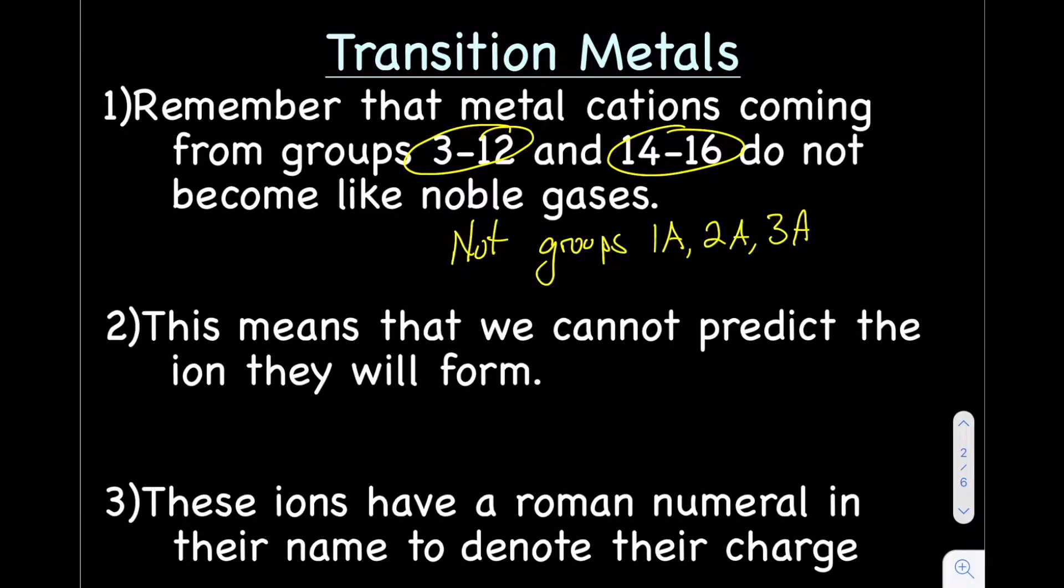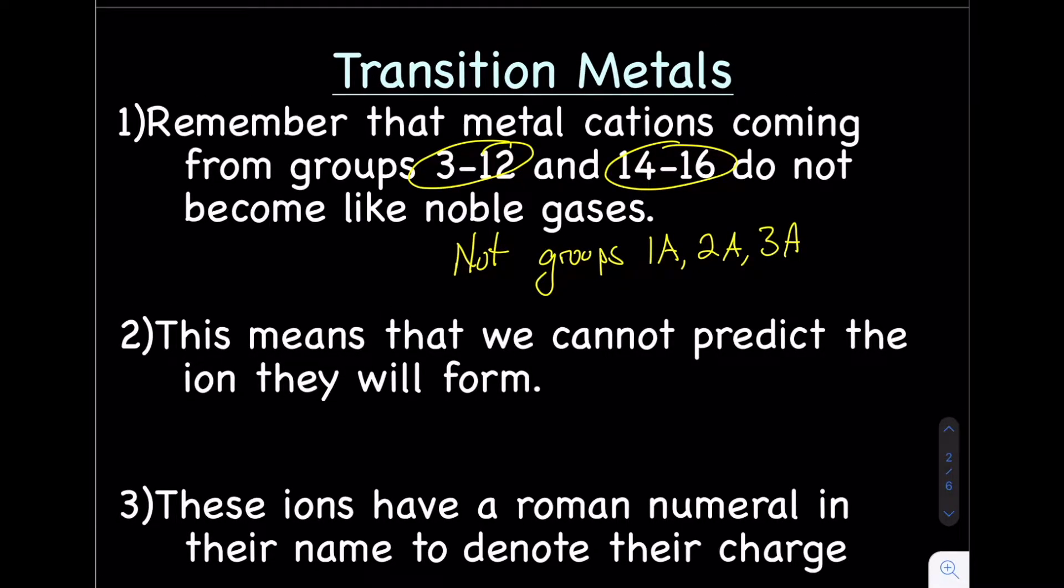Alright, so a quick review on transition metals. Remember that metal cations coming from groups 3 through 12 and 14 through 16 do not become like noble gases. For me, this gets really confusing.